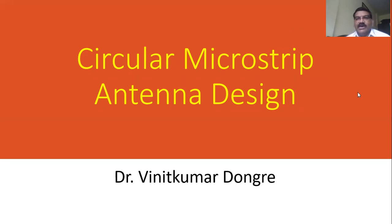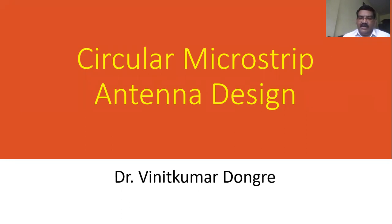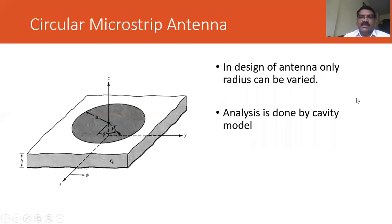We are now going for the circular microstrip antenna. We have already discussed the rectangular microstrip antenna, and now we will go for the circular microstrip antenna. In the design, the substrate is present with the ground plane on the entire lower side in the XYZ plane. For the circular microstrip antenna, the cylindrical coordinate system is generally used.